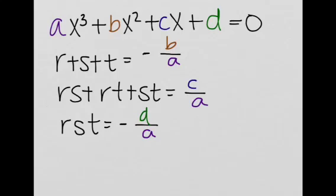Now let's look at Vieta's formulas for higher degree polynomials — specifically a cubic. For ax cubed plus bx squared plus cx plus d equals zero, Vieta's formulas state: r plus s plus t equals negative b over a, rs plus rt plus st equals c over a, and rst equals negative d over a. Notice that the signs alternate: negative, positive, negative.